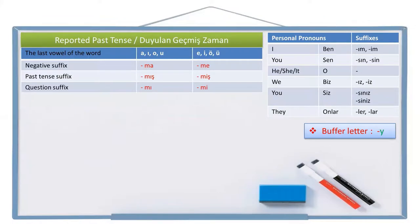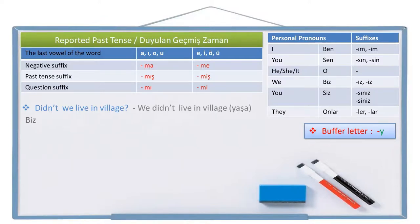Let's make some plural ones. Didn't we live in the village? The negative sentence is: we didn't live in the village. Live is 'yaşa' in Turkish. We is 'biz', village is 'köy', in the village is 'köyde', live is 'yaşa', not live is 'yaşama', didn't live is 'yaşamamış'. Leave a space and write the question suffix 'mı' and the personal pronoun suffix. Two vowels cannot be together, so we need a buffer letter. Biz köyde yaşamamış mıyız? Didn't we live in the village?